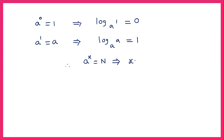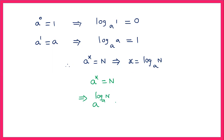From the basic definition of logarithm, a power x equals n, then x is called log n to the base a. If we replace x here, we get a power log n to the base a, which equals n. So this is another important law of logarithm: a power log n to the base a equals n.